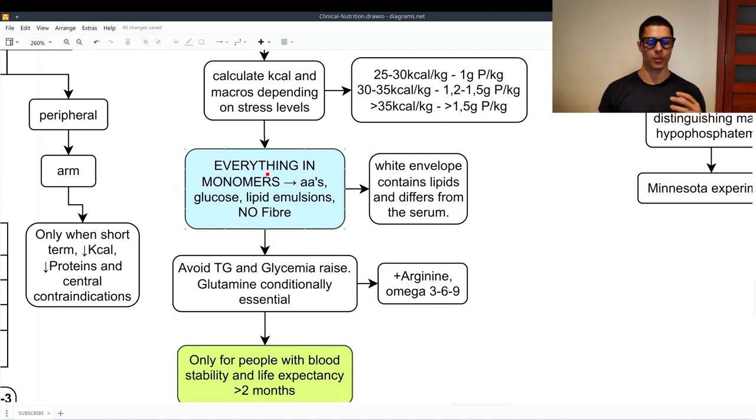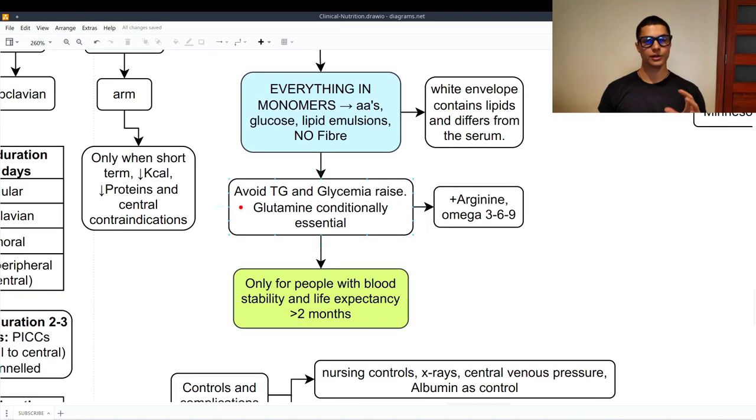Again, everything must be in monomers. And you must know that the white envelope in the parenteral nutrition contains the lipids and differs from the serum. In this way of nutrition, we must avoid at all costs the triglyceride and glycemia raise. If they go up, there is a problem. Also, the fact that glutamine is conditionally essential. And when we're using this type of nutrition, the parenteral one, chances are the individual is sick quite a bit. And glutamine synthesis in the body is lowered. So, therefore, we can consider it as semi-essential. Then we also have to provide arginine, together with glutamine, and all the omegas. Omega-3, 6, and 9. Essentially, indeed.